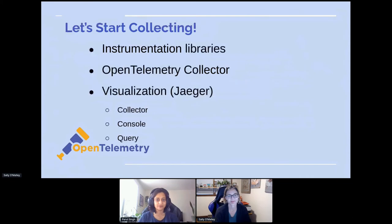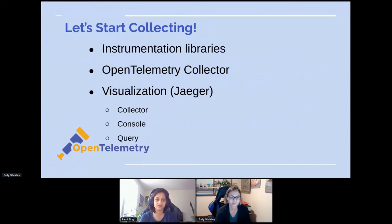Once you have instrumented and set up the pipeline, you want to see what's going on, so you need to set up the visualization backend. We did this using Jaeger. While Jaeger has a complete set of tools for distributed tracing, we are only using three components: the collector, which receives spans and adds them to a queue; the console, which helps you visualize the distributed tracing data in a UI; and the query component, which is a service that fetches traces from storage.